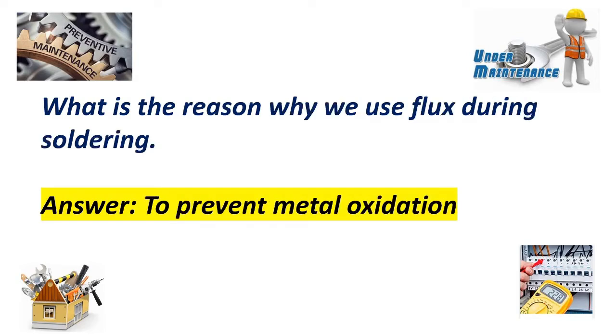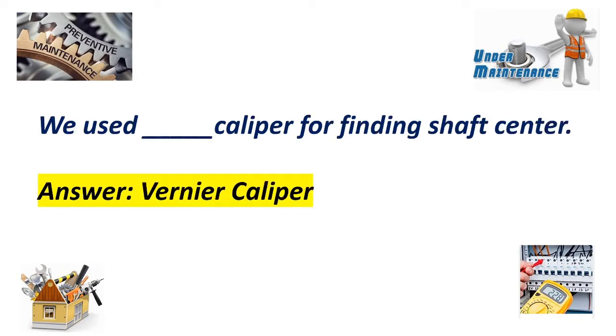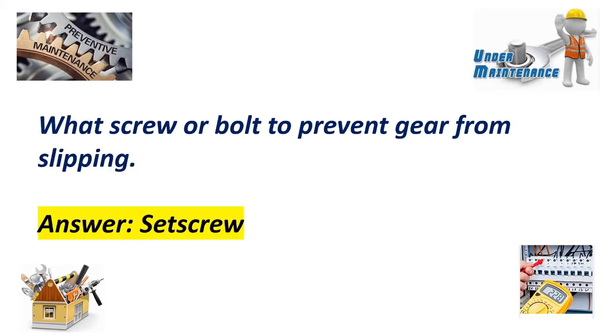What is the reason why we use flux during soldering? Answer: To prevent metal oxidation. We use vernier caliper for finding sharp center. What screw or bolt to prevent gear from slipping? Answer: Setscrew.